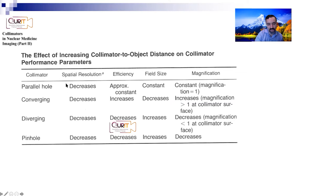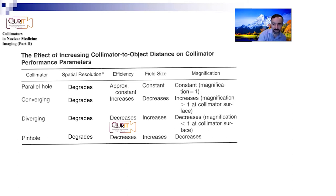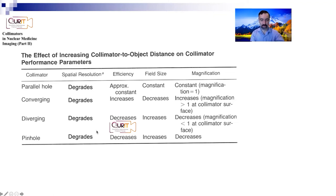When this diagram says resolution 'decreases,' they really mean to say it 'degrades.' A decrease in the full width at half maximum is actually a good thing - what they really mean is it degrades, meaning the FWHM actually increases. So as the collimator-to-object distance increases, spatial resolution degrades in all collimator types. The efficiency or sensitivity decreases for pinhole and diverging, but increases for converging, and stays the same for parallel hole.